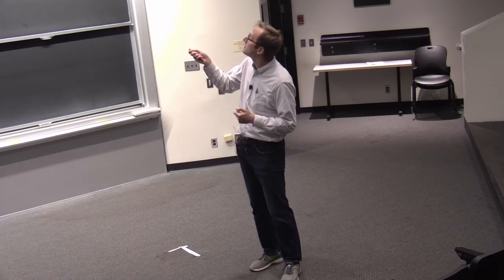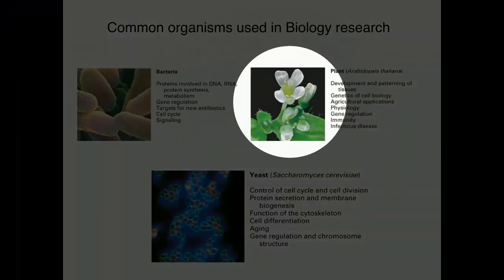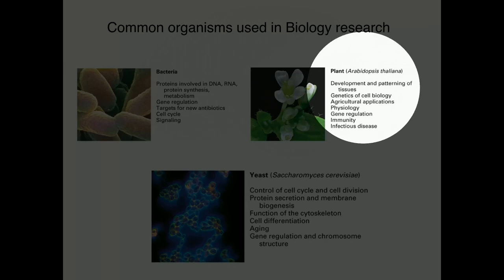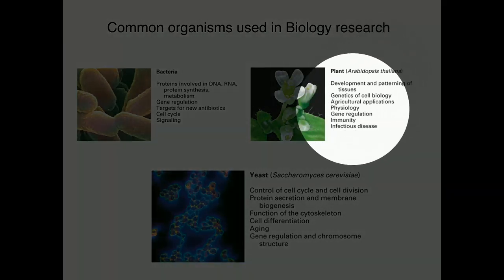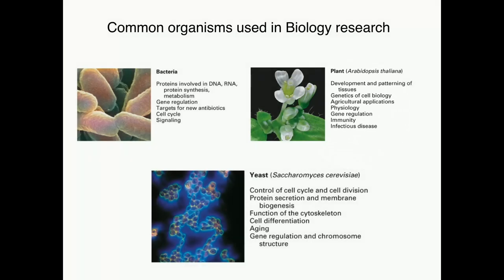One terrific model organism in plants is Arabidopsis thaliana. Arabidopsis has played an important role in elucidating mechanisms of development, but also in making advances in scientific research that relate to agriculture, such as disease resistance and host-pathogen interactions.